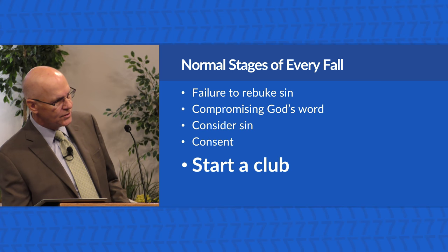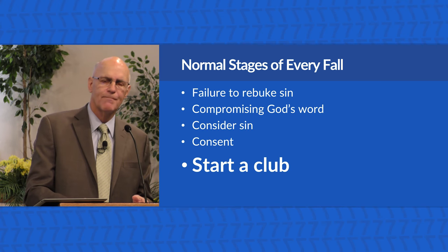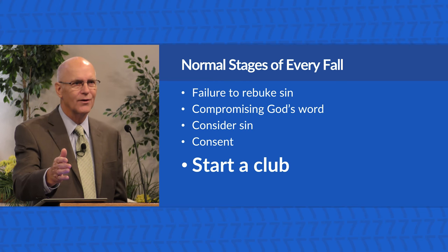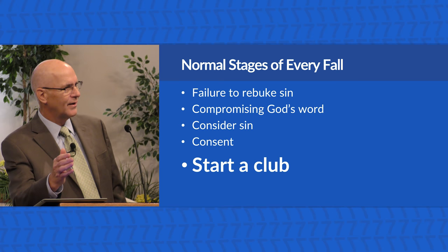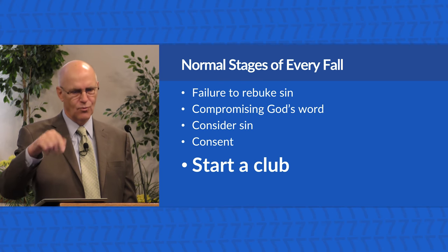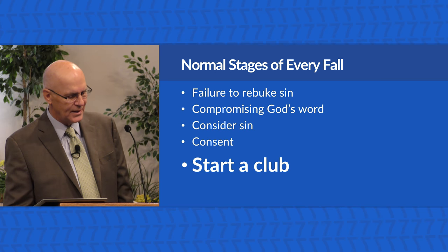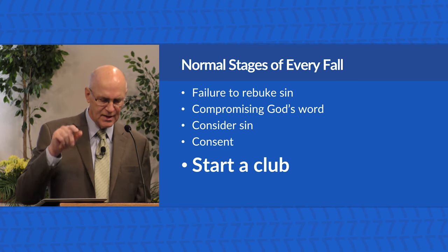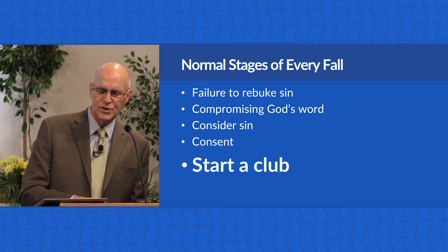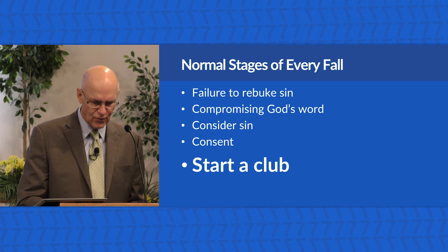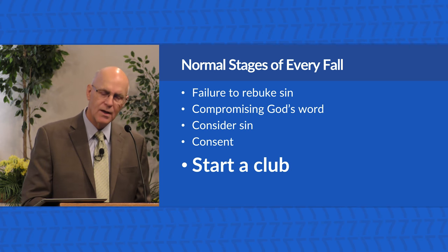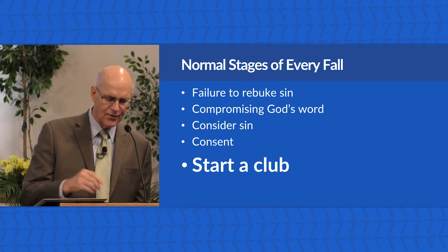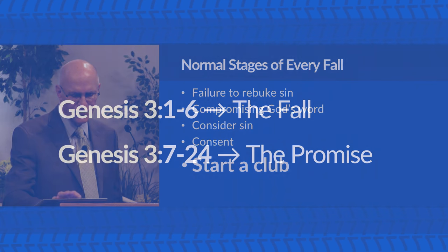Why did I choose this passage as one of the seven? Because it explains human nature. It explains perfectly how we got to where we are as human beings today. In this first section of passage number two — chapter 3, verses 1 to 6 — we find the reason why mankind and the creation is in its fallen state.